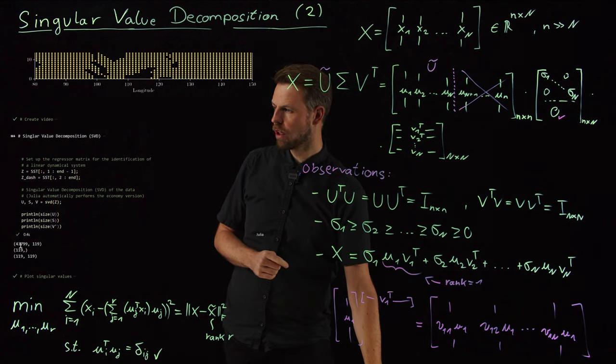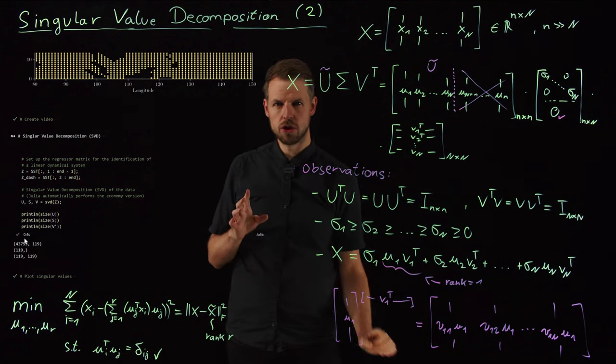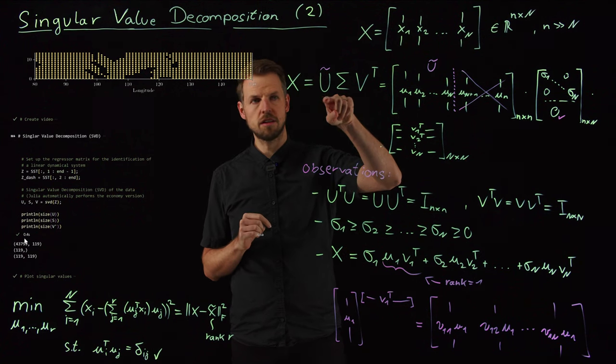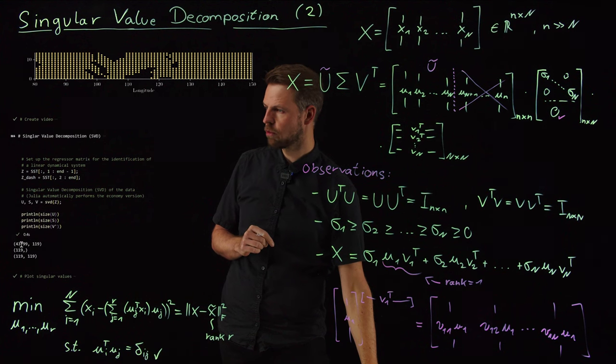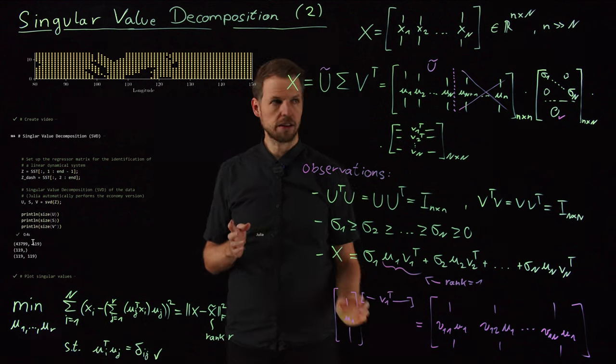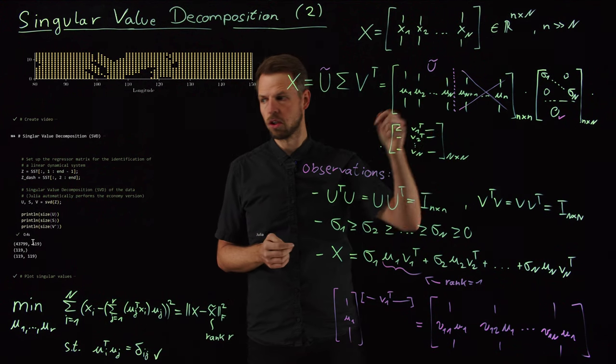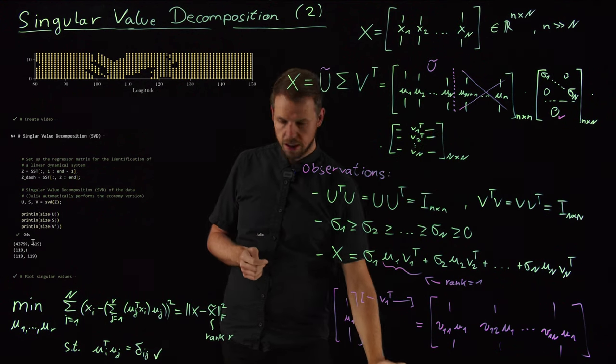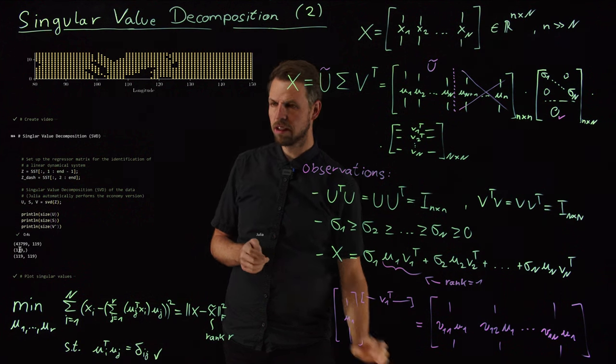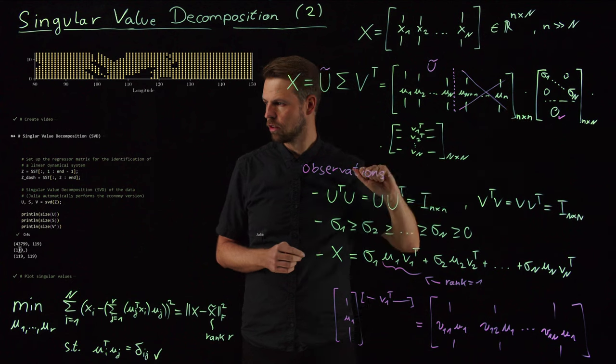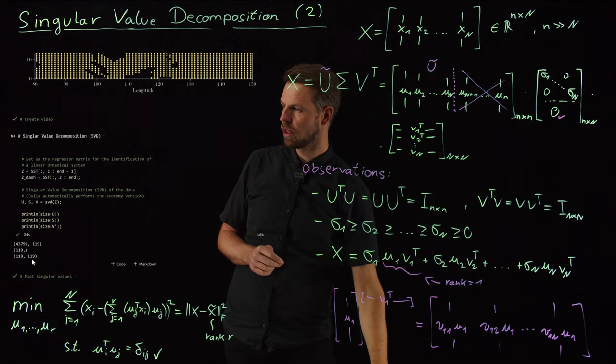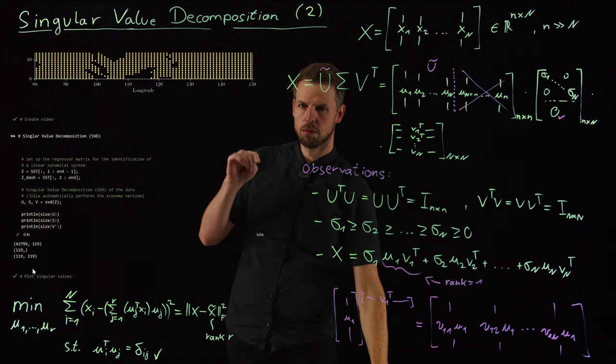And this is what we find. We have already here the economy version of the svd, which means we calculate the U tilde, because we do not have a 44,000 by 44,000 matrix, we have a 44-ish thousand times 119, so the first big N columns of this matrix. We then have 119 singular values, so this is not the diagonal matrix, but these are just the diagonal entries. And the V matrix is 119 by 119, so big N by big N.